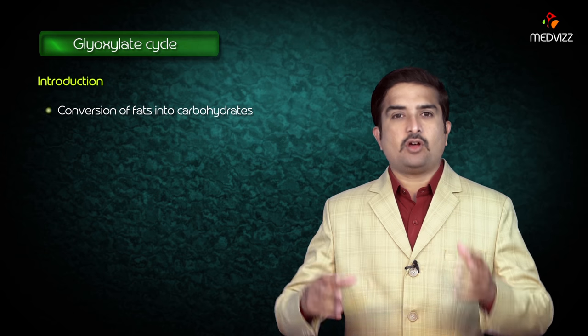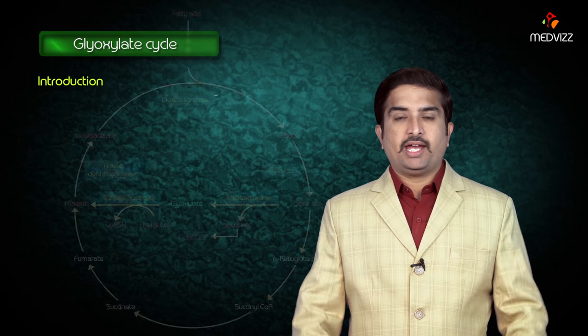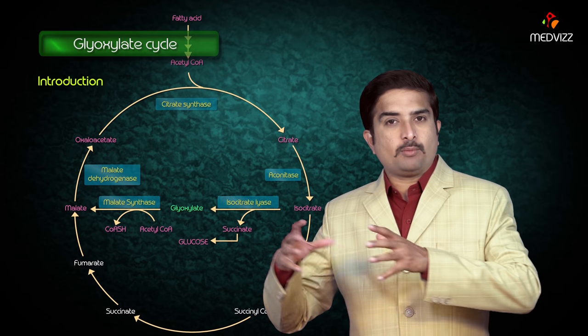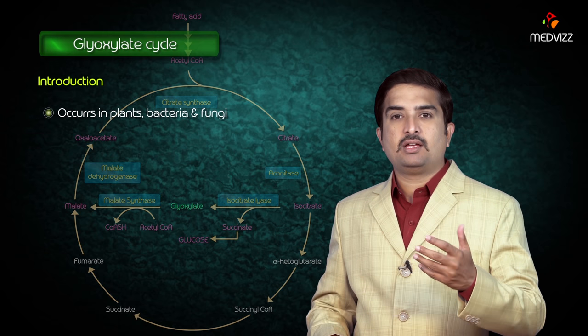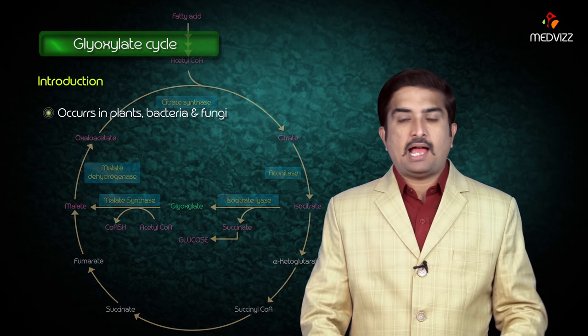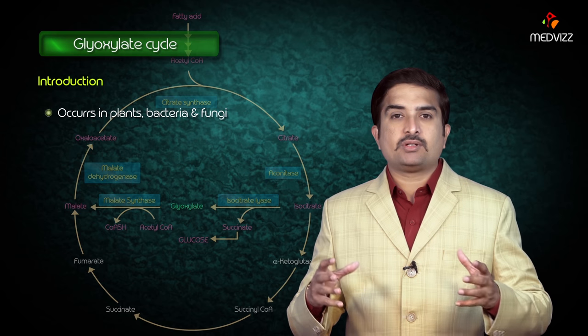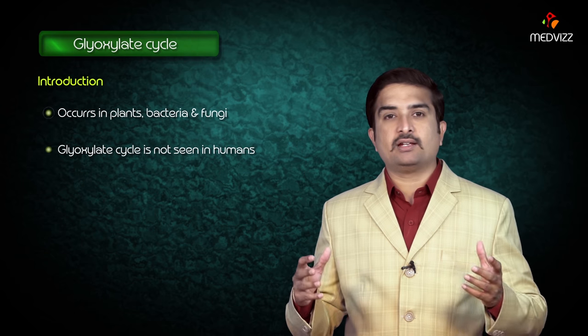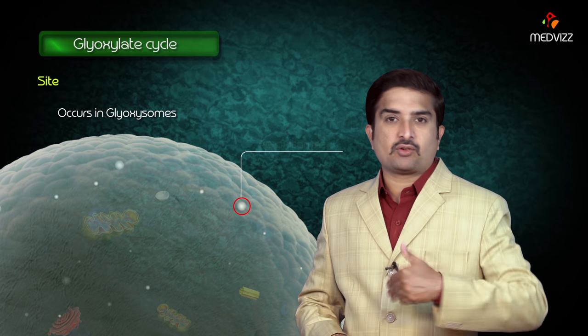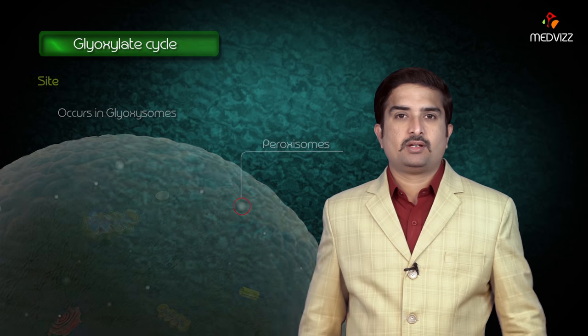The glyoxylate cycle involves conversion of fats into carbohydrates. It is a variation of the tricarboxylic acid cycle, especially occurring in plants, bacteria, and fungi. Animals, including man, cannot carry out this net synthesis of carbohydrates, so the glyoxylate cycle is not seen in humans. The glyoxylate cycle occurs in glyoxysomes, which are specialized peroxisomes.